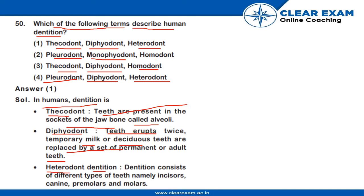Heterodont dentition means the dentition consists of different types of teeth, namely incisors, canine, premolars, and molars.